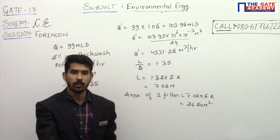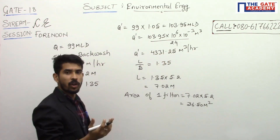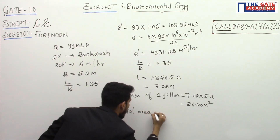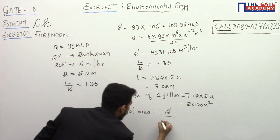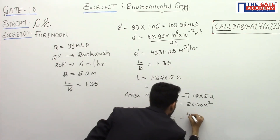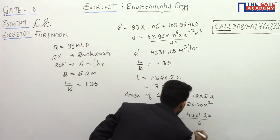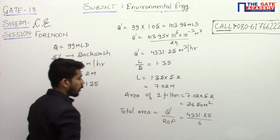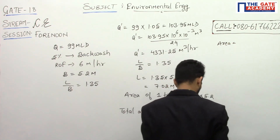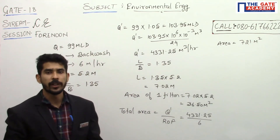Now let us find what total area is required. Total area equals Q effective divided by the rate of filtration. That is 4331.25 divided by 6, which gives a total area of 721 square meters.